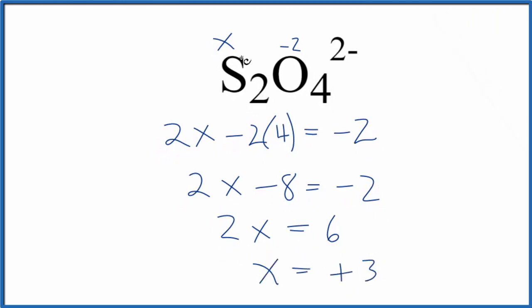So the oxidation state on each sulfur in S2O4 2-, that's going to be positive 3. Each sulfur atom has a positive 3. So that's how you find the oxidation number for the sulfur here in S2O4 2-.